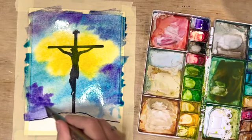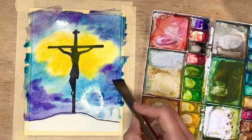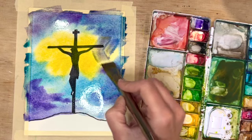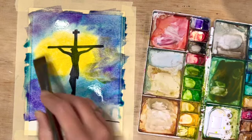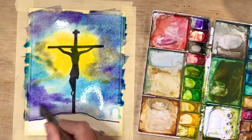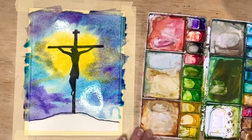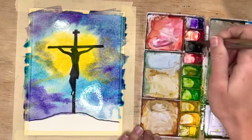I'm adding some darks kind of along the edges and in the corner. This also kind of frames the cross making it more in the center of the picture. I thought there was just a little bit too much yellow so I'm adding a little bit more purple and kind of making that area a little smaller.